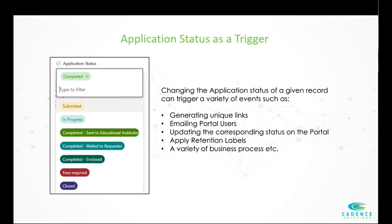In order to trigger this automation, one of the major triggers we have is application status. In our SharePoint site we have a column called 'application status' — in the demo environment it's just called 'request status.' Application status is a choice column with a drop-down of selected options: completed, submitted, in progress. When an internal staff member chooses a given status, that will trigger different things. The most powerful one is 'completed' — once a form submission has been given the completed status, that generates that secure link and email to the end user.